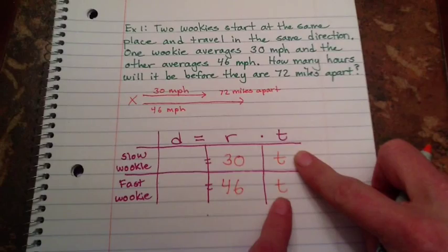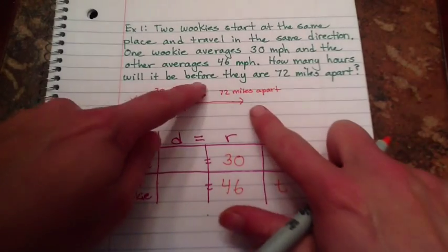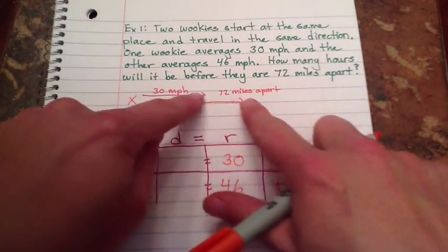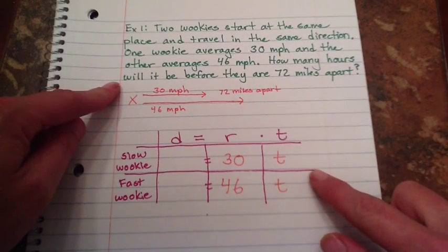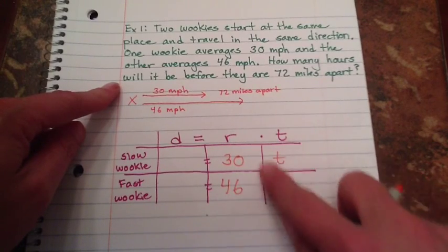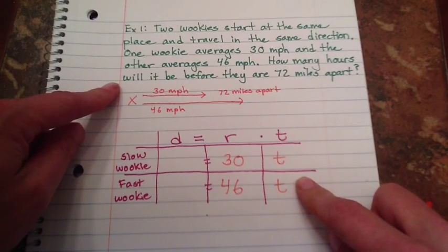And they're traveling for the same amount of time because we're looking at the time when they are 72 miles apart. Time is your hours, which is actually one of your variables. This is the main one you're looking for, your time in hours.